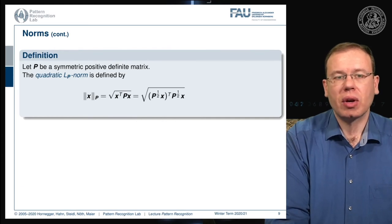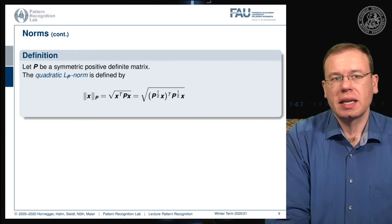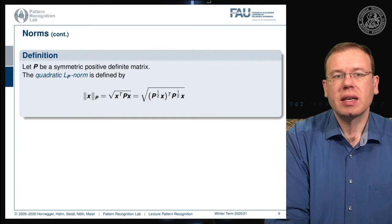You can write this in another way if you split P, but you need to be able to decompose P. If you use a symmetric positive definite matrix, this factorization is possible. This way, you can rewrite it as P to the power of 0.5 times x, and then the 2-norm.